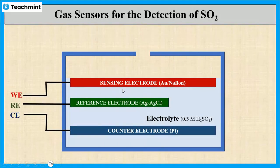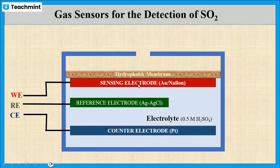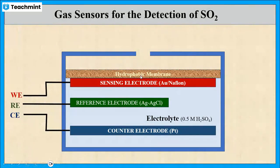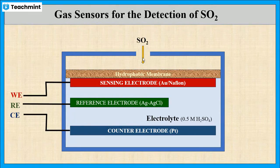The sensing electrode is attached with a gas permeable hydrophobic membrane. It allows sulfur dioxide gas to flow into the sensor and restricts the penetration of moisture. Let us see the working.